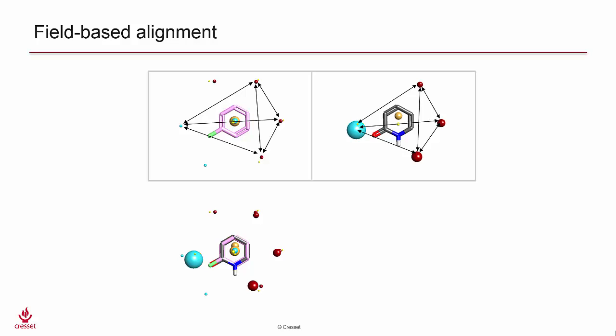Once appropriate starting alignments are found, the structures are aligned according to least squares fittings of the field point maps, then submitted to a simplex optimizer.